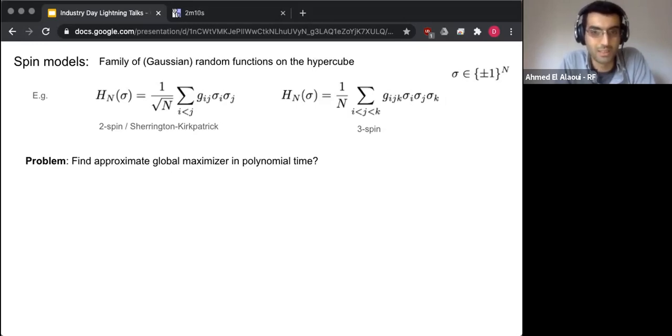So the first one is just a quadratic that depends on interactions between just two single sites, which are sigma i and sigma j. And the strength of this interaction is modeled by this random variable, this coefficient gij, which I'm going to consider to be Gaussian and iid. They're all independent means zero variance one.